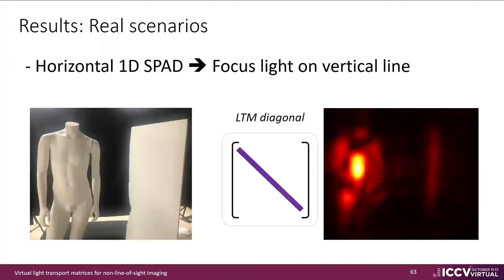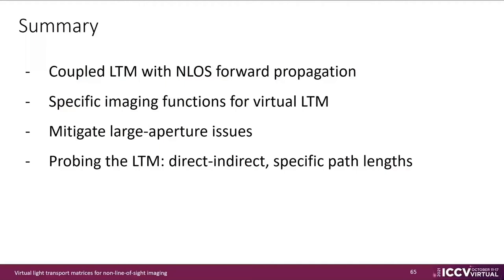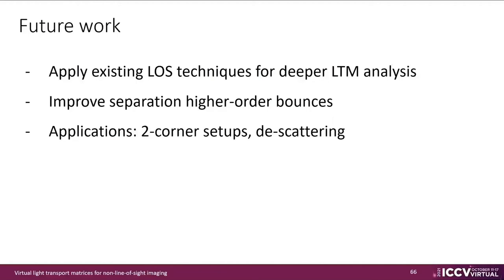Finally, we demonstrate LTM computations in real NLOS scenes. The resulting diagonal computation yields the direct component of the hidden scene. While point-to-point focusing requires combining 2D arrays of both SPADs and lasers, available 1D SPAD arrays are also compatible under our framework. These yield simpler LTMs where the projector illuminates 1D vertical lines instead of single points, resulting in a vertical slice of the path-bouncing indirect light over the mannequin. To summarize, we define a framework that couples the LTM formulation with NLOS forward propagation, and provide specific imaging and gating functions for different elements of the LTM under the phasor field framework, addressing large aperture issues from NLOS setups. We demonstrate how this serves to probe virtual LTMs to separate light components and specific illumination path lengths, and hope our framework will benefit from existing line-of-sight techniques for LTM analysis applied to the NLOS regime.